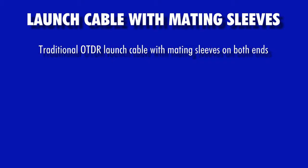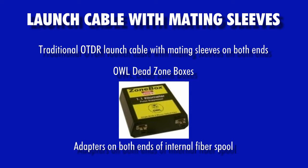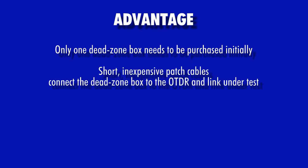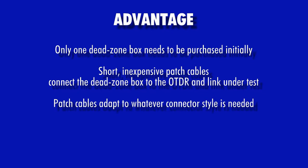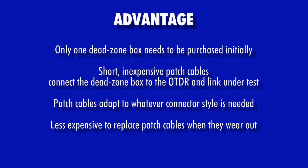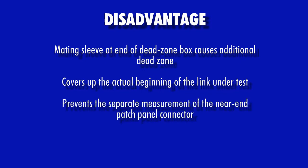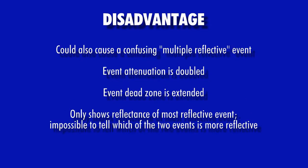The next configuration takes a standard OTDR launch cable and adds mating sleeves onto each end, resulting in a female-to-female configuration. This is the configuration of OWL's dead zone box products. The obvious advantage here is that only one OTDR launch cable needs to be purchased initially, and short patch cables make the final connection to the OTDR and the link under test. The patch cables allow the technician to adapt to whatever connector types are needed and are less expensive to replace when they wear out. The disadvantage is that the final mating sleeve of the dead zone box produces a reflective event that effectively covers up the actual beginning of the link under test, so the near end connector cannot be measured for loss or reflectance. These two events will be too close together, resulting in a multiple reflective event scenario where the event attenuation is roughly double what it should be, the dead zone at the beginning of the link is extended, and only the reflectance of the most reflective event is considered.